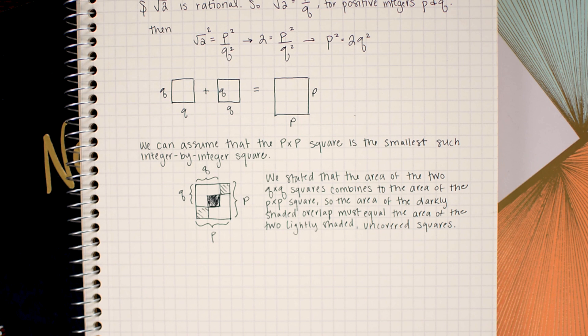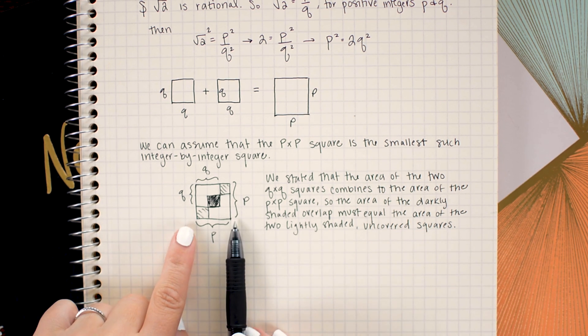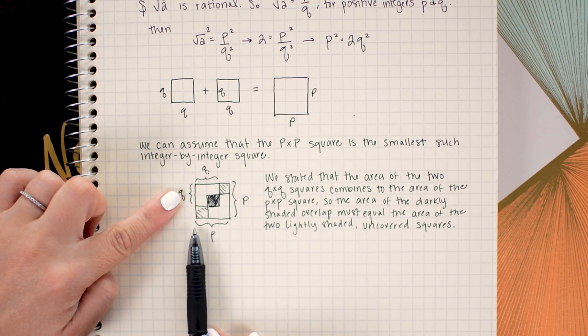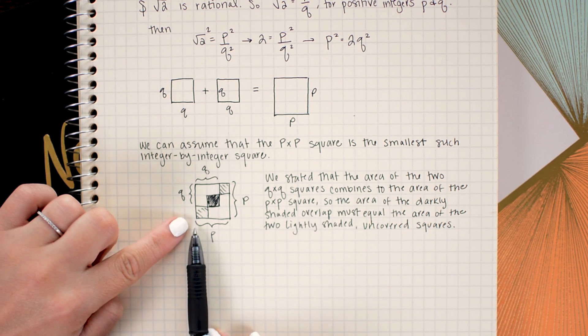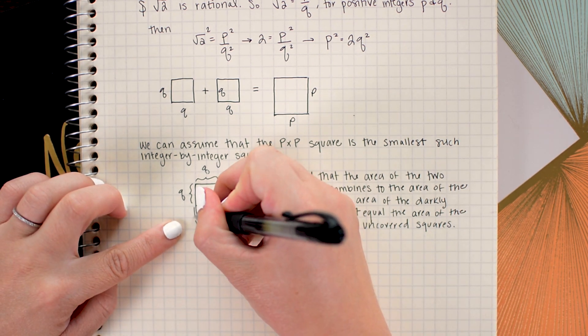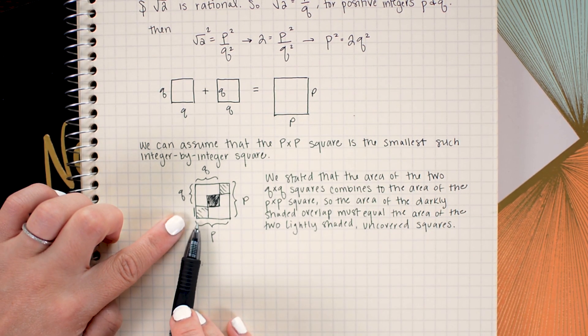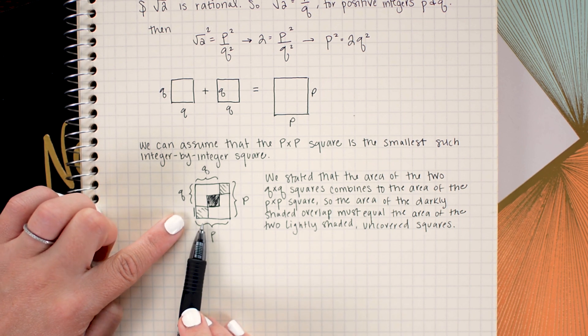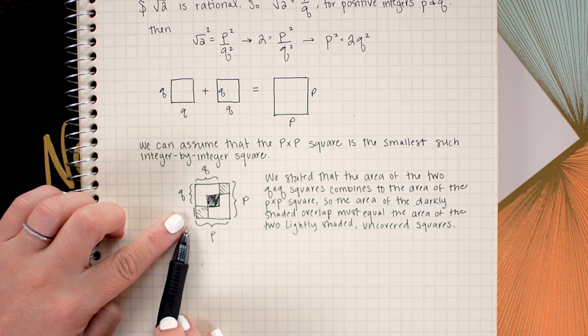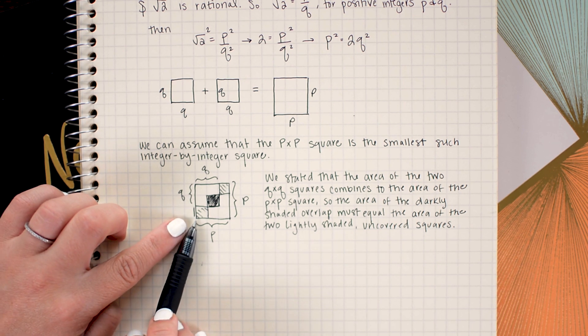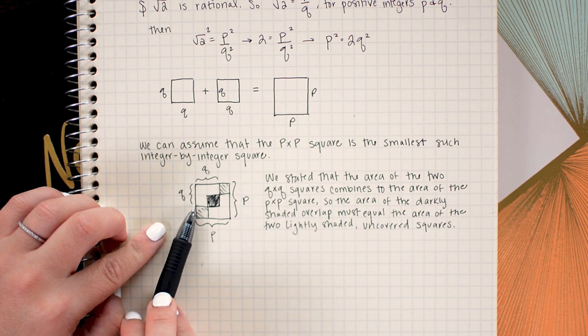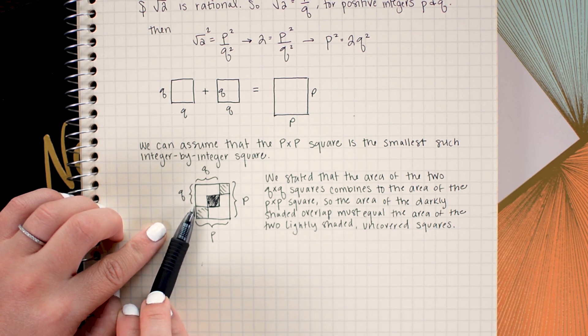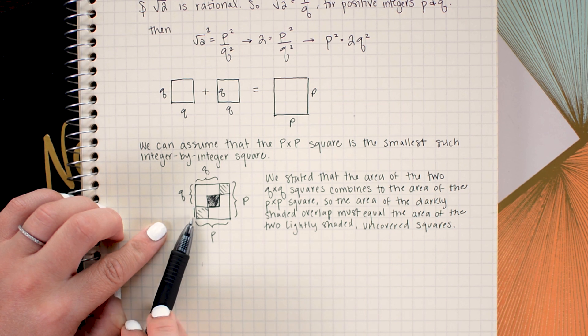Now here is where our contradiction is going to come in. So because we know that p and q are integers, then I know that the length of my lightly shaded square must also be an integer by integer square because it is the difference of the p length minus the q length and both p and q are integers. And I know that an integer minus an integer yields an integer.